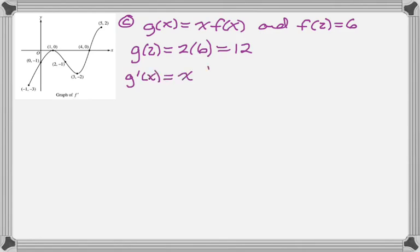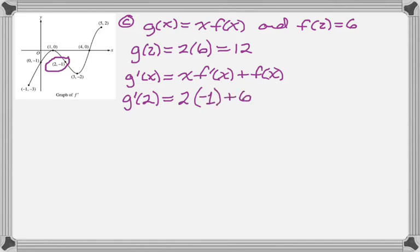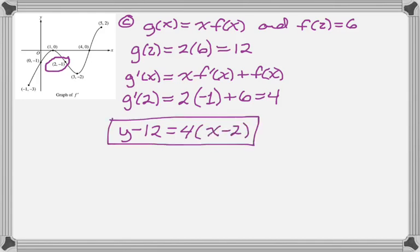And then g prime requires the product rule. So we use that. And then we're going to have to substitute in. And looking at the graph, we know that g prime, or rather f prime of 2 is negative 1. And now we know everything we need, so we're just going to plug it in. And there you go.